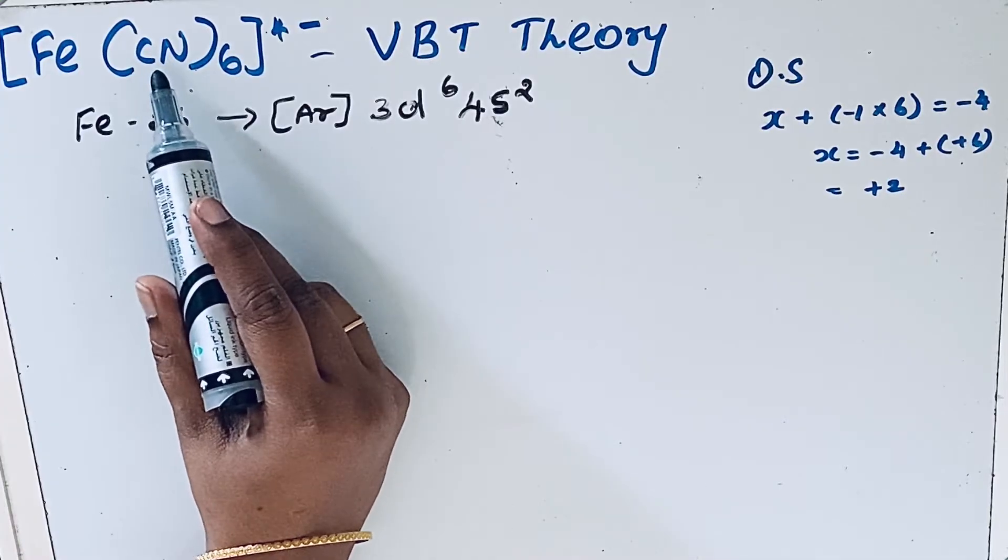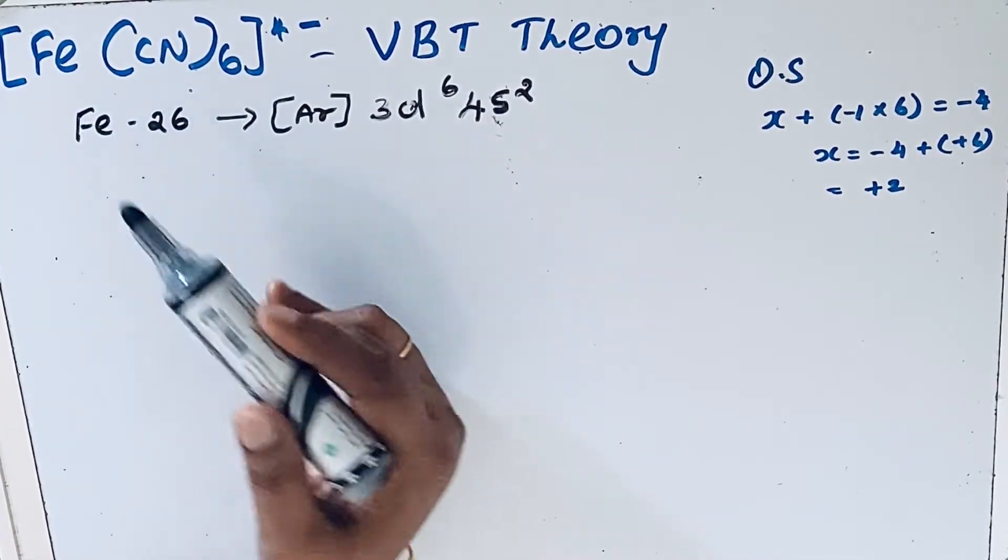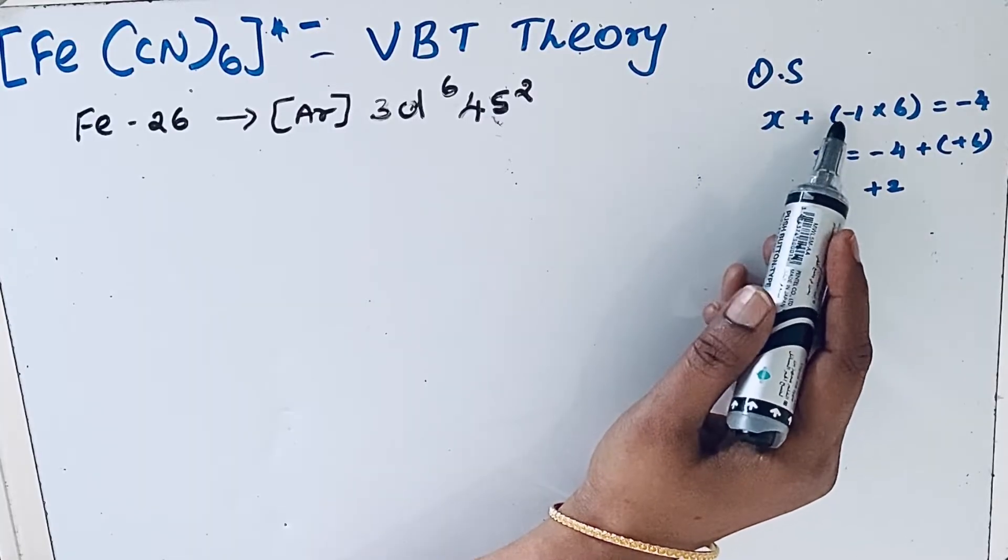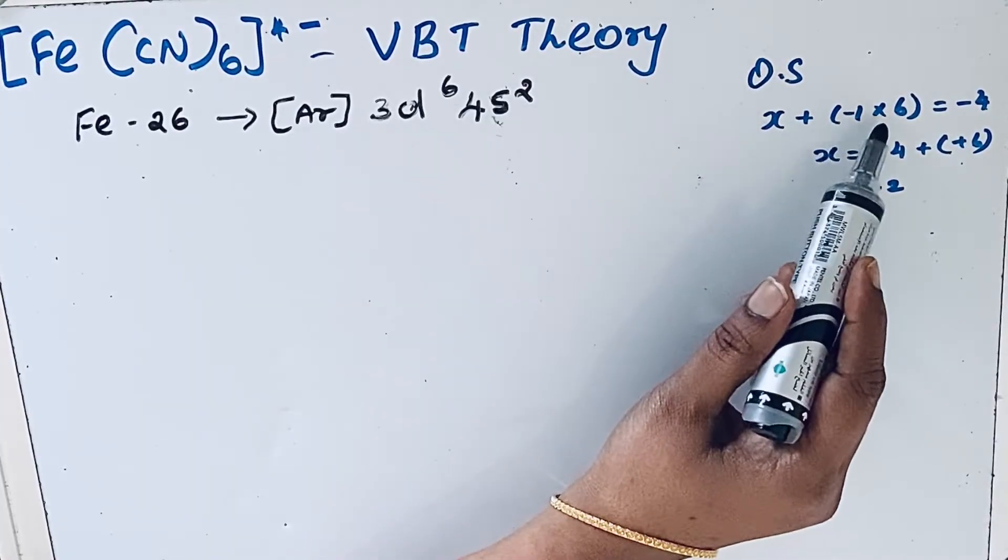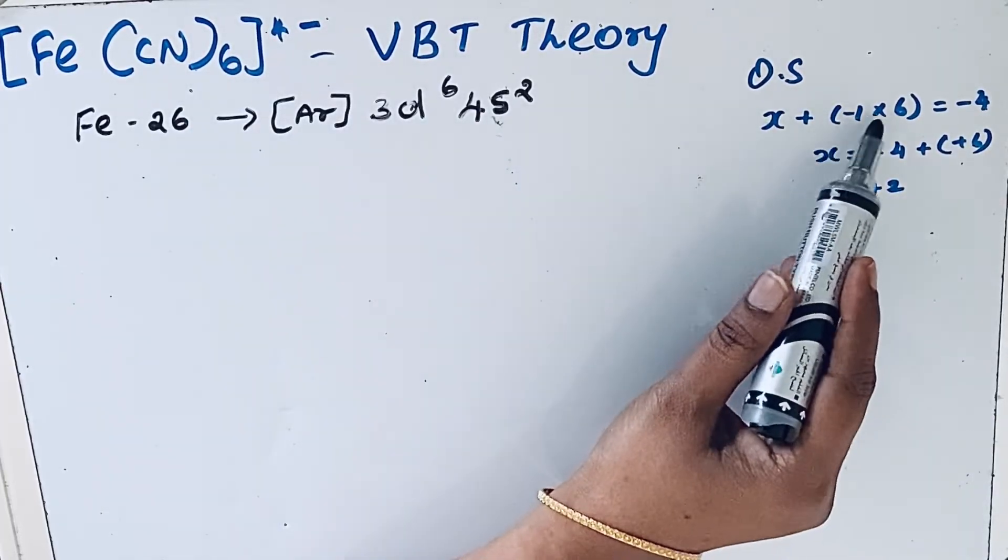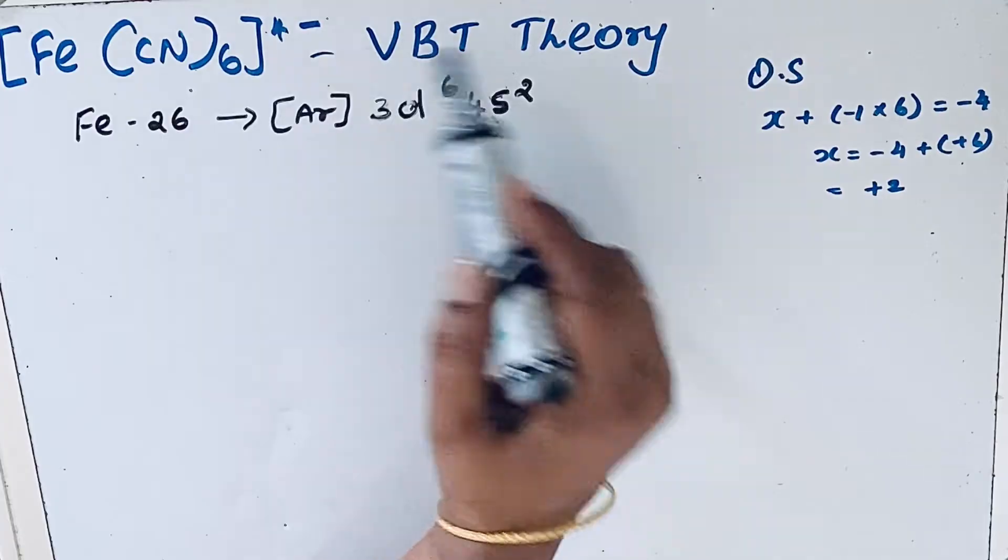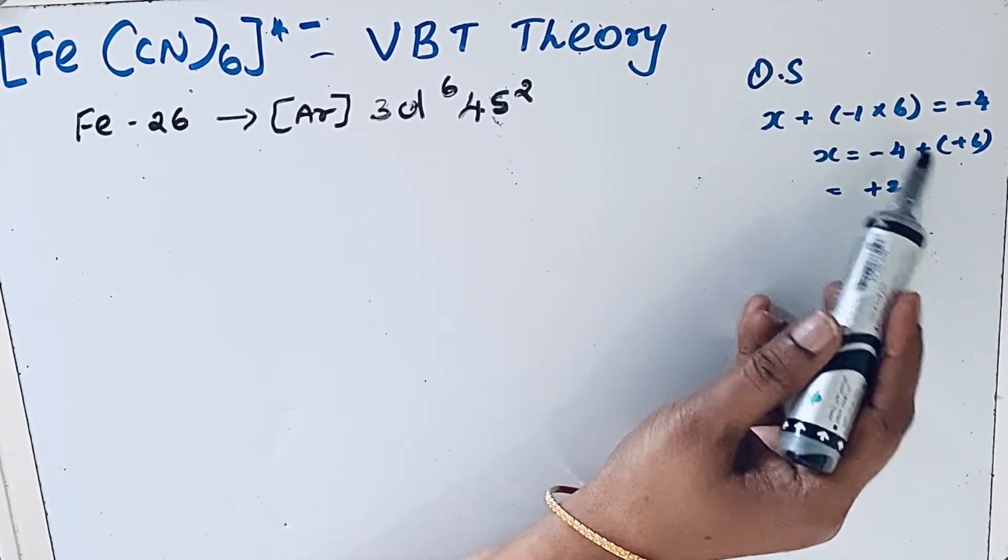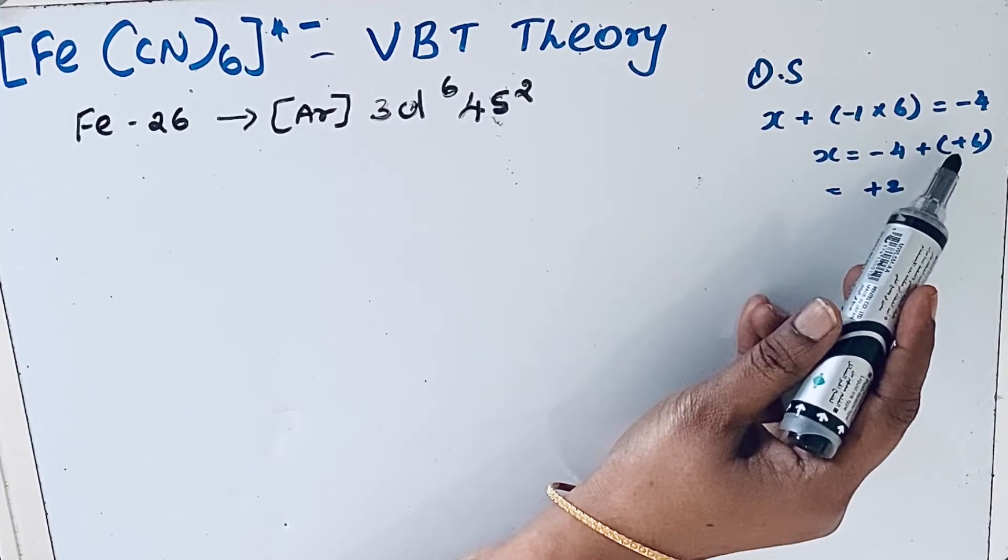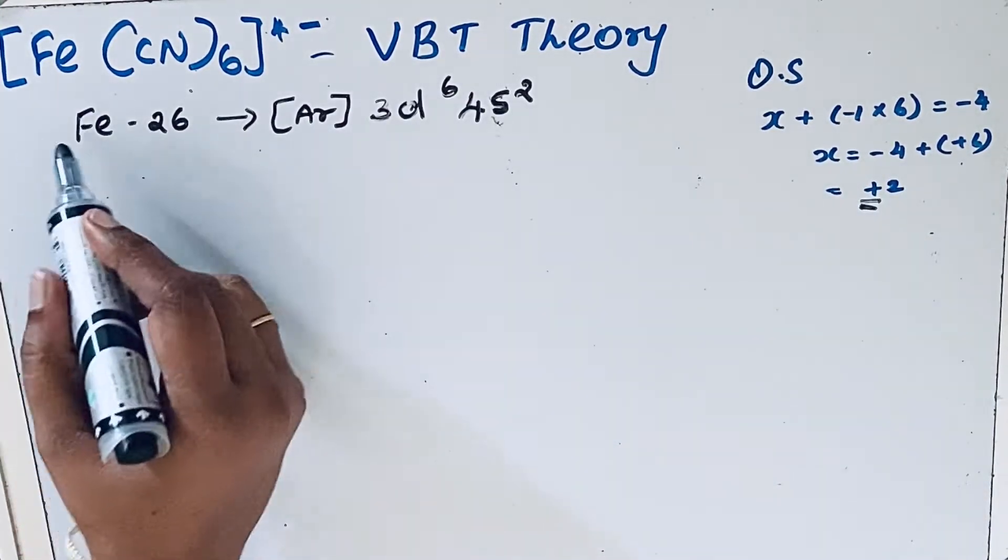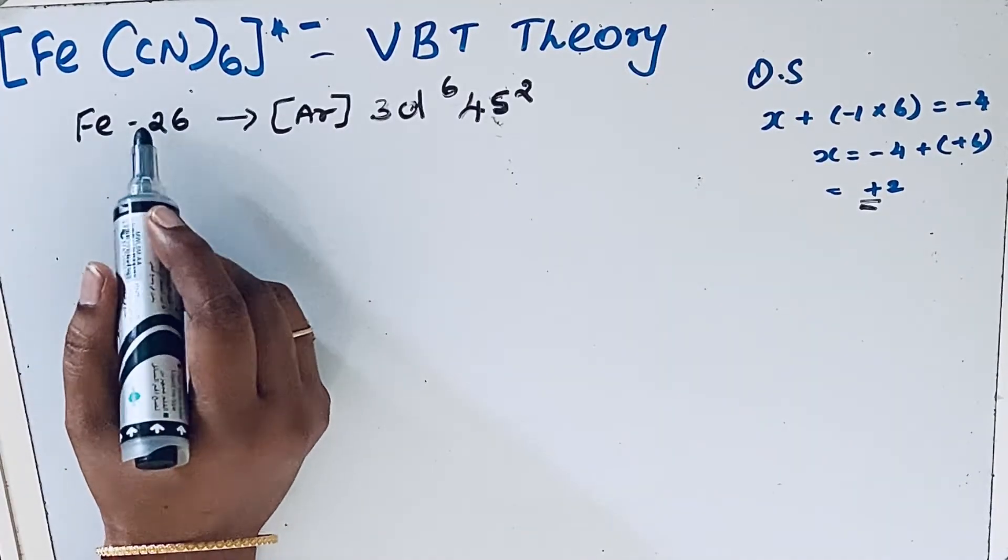CN is the ligand. To find the oxidation state, let x be the oxidation state of Fe. CN carries a -1 charge, and there are 6 CN groups, so x + (-1)(6) = -4. Solving for x: x - 6 = -4, therefore x = +2. This means Fe in this complex is in the